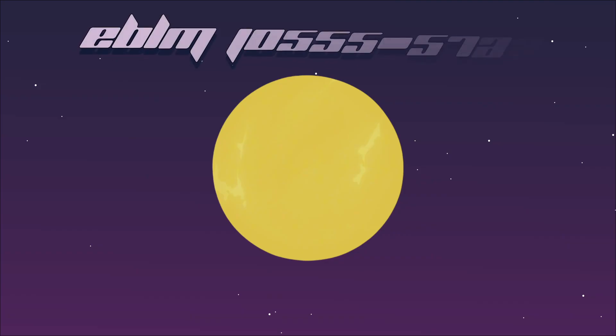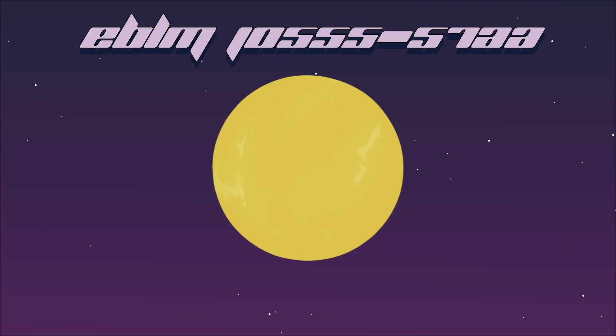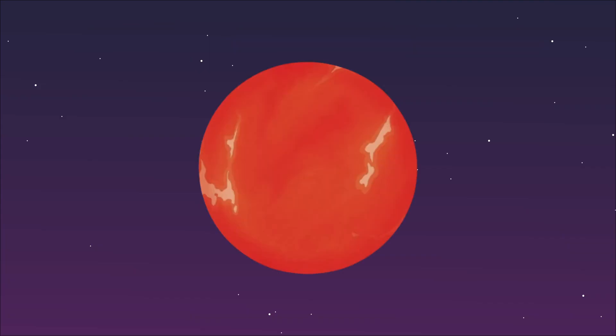My primary star is known as EBLM J0555-57AA. Stars so cold like me can live a very long life - up to trillions of years.